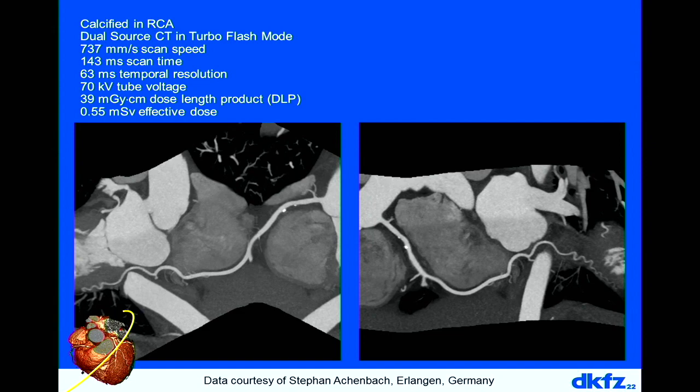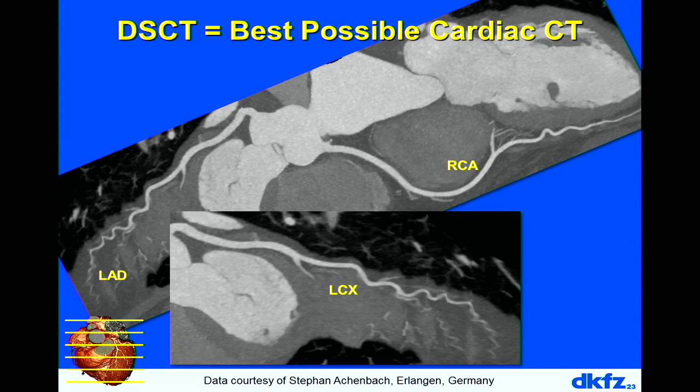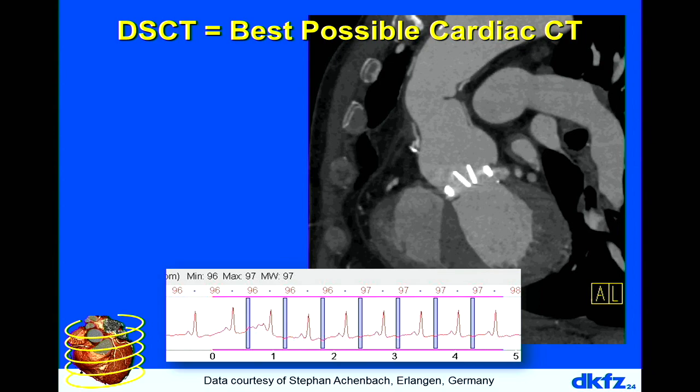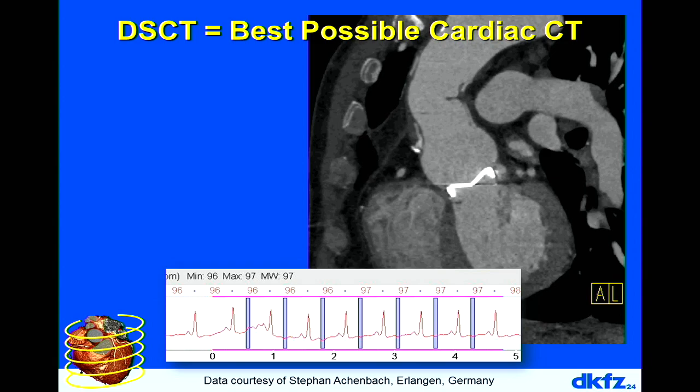Here's another example of a sequence scan — several circles — showing coronaries depicted up to their finest ends, allowing very nice reading of these images. With retrospective gating, you can also see functional studies — for example, an aortic valve to see whether it's working correctly and whether it's been implanted correctly.